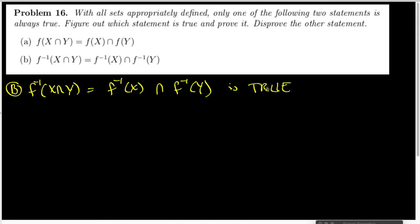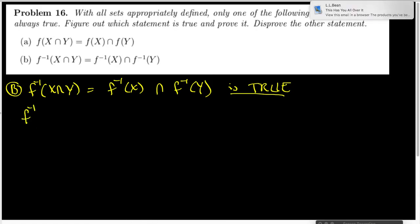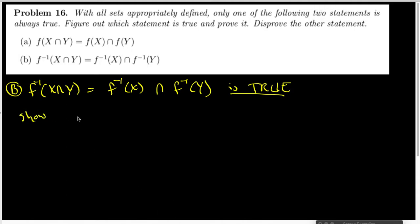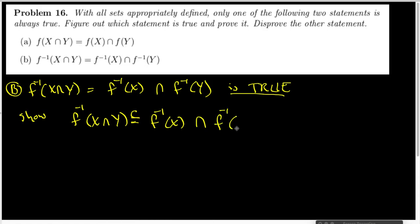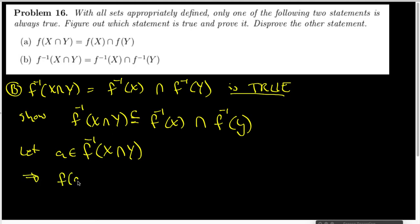To prove these two sets are equal, we can do a double inclusion proof. For the first direction, I want to show that the pre-image of X∩Y is a subset of the pre-image of X intersected with the pre-image of Y. So I'm going to let 'a' be inside the pre-image of X∩Y. What this says is that f(a) has to be inside X∩Y.